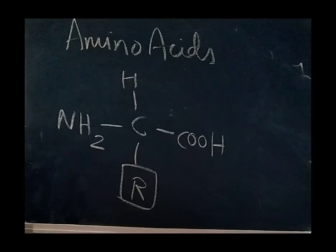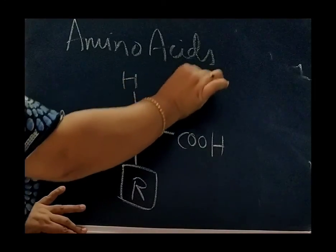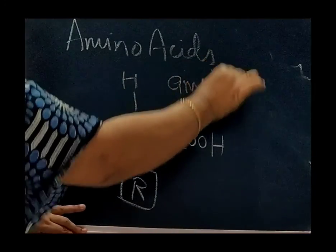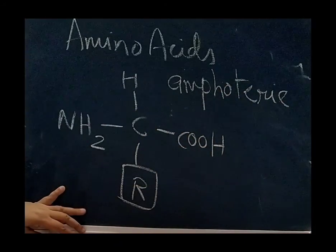The amino group accepts a proton, whereas the carboxyl group donates a proton. So amino acid can act as both acid as well as base and it is called amphoteric in nature.